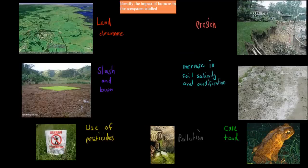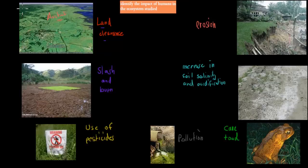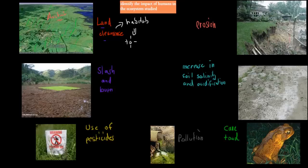These are generally the most obvious impacts of humans on ecosystems. First, we've got land clearance. For example, this picture is somewhere in Australia — a couple of thousands of years ago, all this would have been forest. You can see the forest in dark green, but most of the land got cleared and is now light green — just grass. When we clear land, we obviously clear and destroy habitats as well, which means a loss of animals and plants.